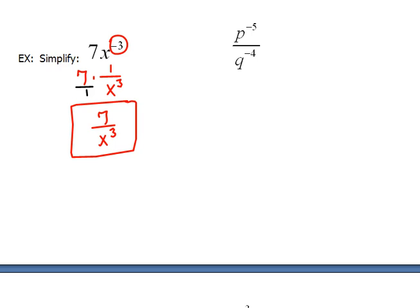For the next problem, we have p to the negative 5 over q to the negative 4. So, right here, this negative exponent tells you that this is in the wrong position. It does not belong on top, we have to flip it over. Instead of the numerator, it needs to be placed in the denominator.